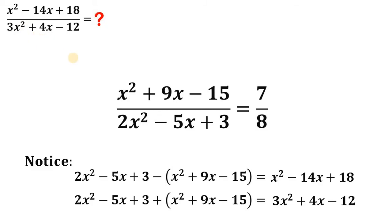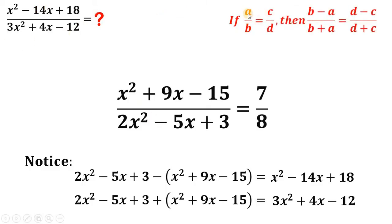This reminds me of the identity that says: if we have a over b equals c over d — two equal fractions — then b minus a over b plus a equals d minus c over d plus c.